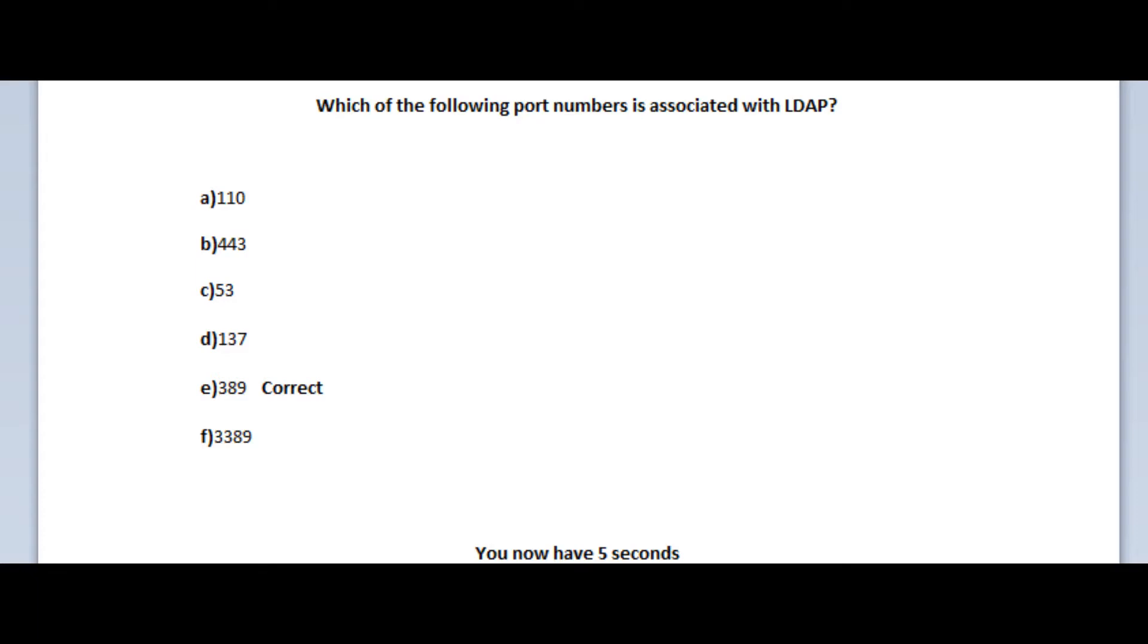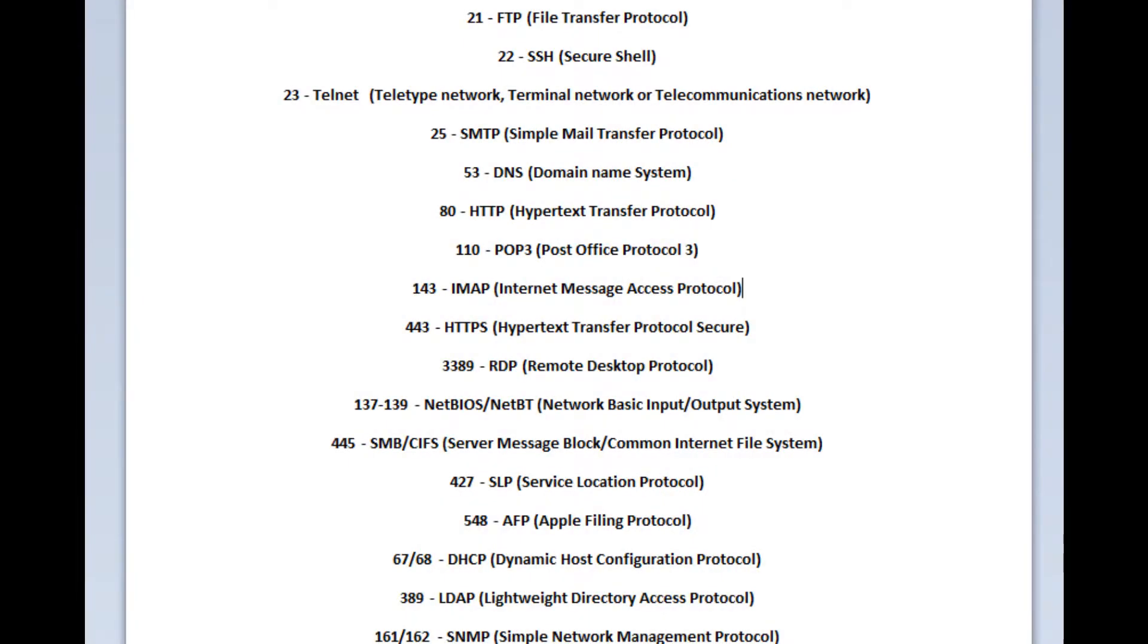The correct answer is E, port number 389. You might be wondering why there are 6 options to choose from, and that is because you will find in your real CompTIA exam similar questions, with 4, 5 or even 6 options to choose from. I cannot stress enough how important it is to memorize the well-known port numbers. It is not difficult at all. There are only 17 of them to memorize. This is a list of all the port numbers you will need for your Core 1 exam.